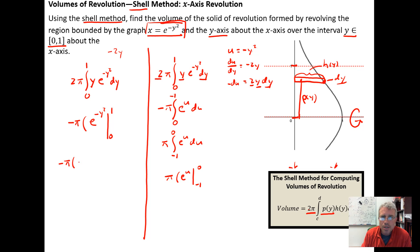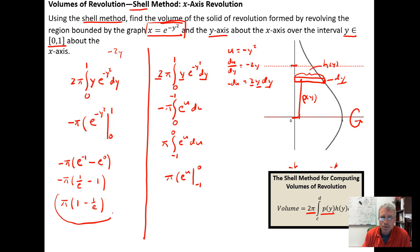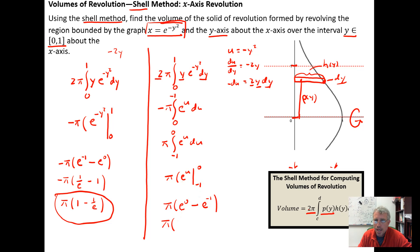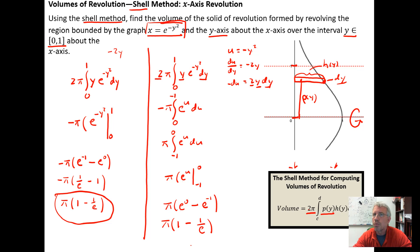Finishing the evaluation using the first method: negative π times e to the negative 1 squared — which is e to the negative 1 — minus e to the 0. This gives negative π times (1/e minus 1). Distributing reverses the subtraction order, yielding the final volume. Using the u-substitution result: π times (e to the 0 minus e to the negative 1), which equals π times (1 minus 1/e). That is the volume of revolution using the shell method with an x-axis revolution.